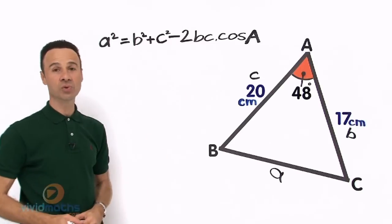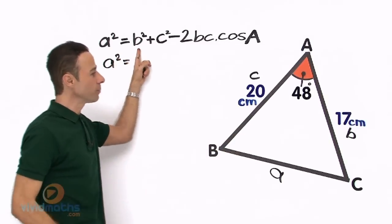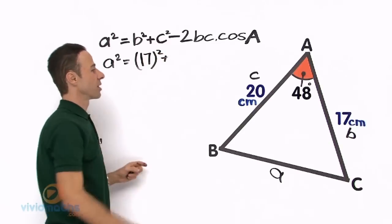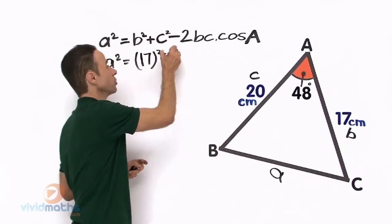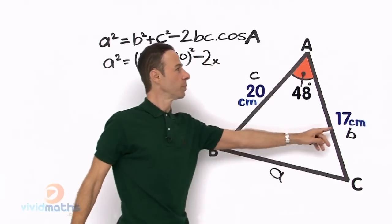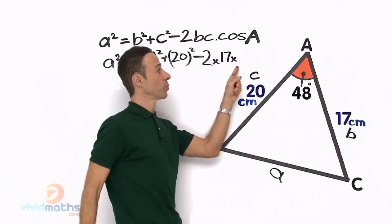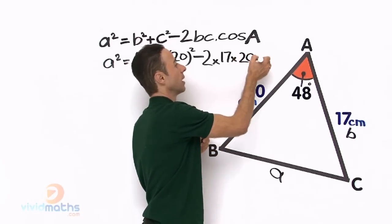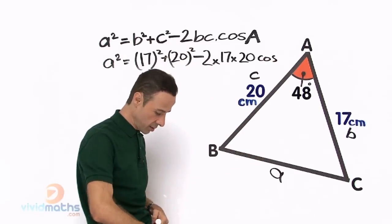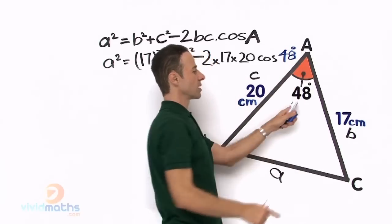So there is our formula. Let us start to drag and drop the appropriate numbers into the formula. So let us start off. We have a² equals, now we have little b which is right over here, that is going to be 17, 17² plus then we have little c right there, that will be 20² minus 2 times. Now what is b again? b is 17, so we have 17 times little c, there is little c there, put it there, times 20. And then we cos alpha or A, capital A, that is 48 degrees. Let me put that in right there, 48 degrees. There is our 48.